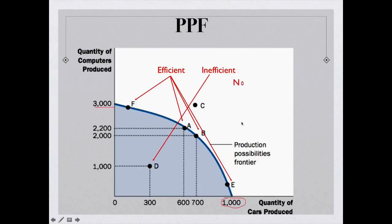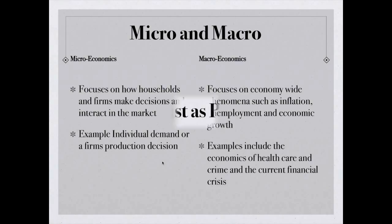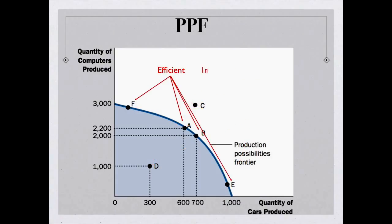Any point inside the line, point D right here, is said to be inefficient. What that means is the economy is not using its resources, its land, labor, and capital to the very best of its ability. So, they could actually produce more computers. They could produce probably 1,800 more computers without giving up the production of any cars. Or if they increase the production of cars, they could probably produce 800 more cars without giving up the production of any computers.